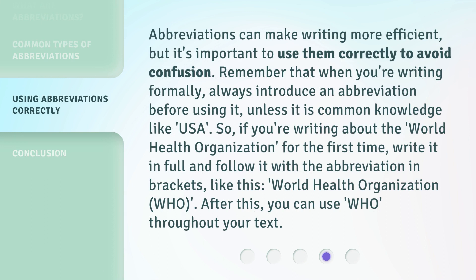Abbreviations can make writing more efficient, but it's important to use them correctly to avoid confusion. Remember that when writing formally, always introduce an abbreviation before using it, unless it is common knowledge like USA. So, if you're writing about the World Health Organization for the first time, write it in full and follow it with the abbreviation in brackets, like this: World Health Organization (WHO). After this, you can use WHO throughout your text.